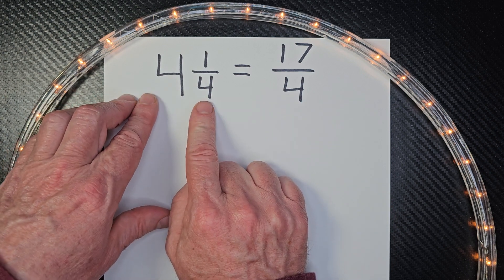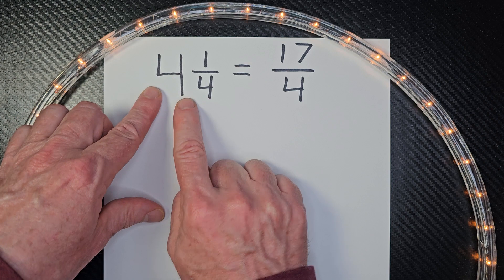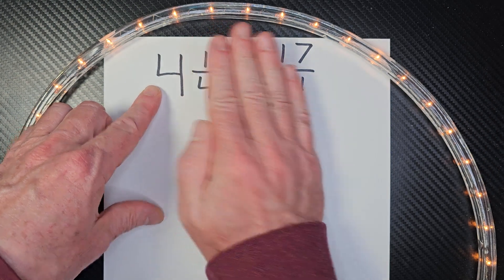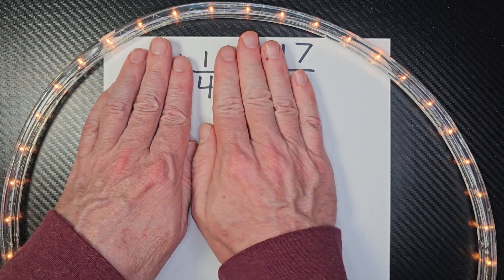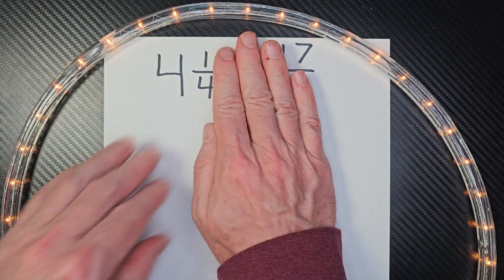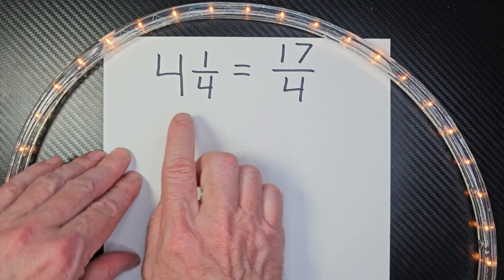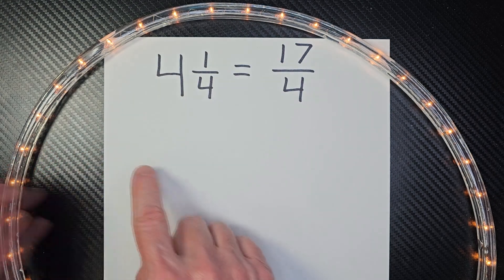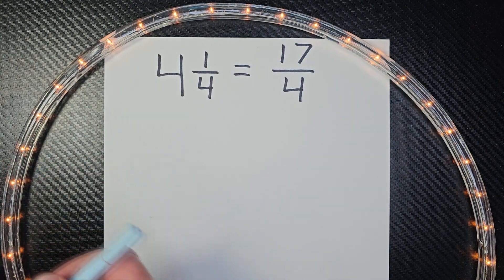This right here is a whole number. Four is a whole number, and one-fourth is a fraction. So to get a better understanding of this, let's draw this out.